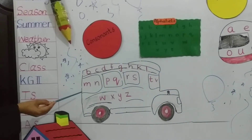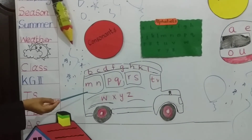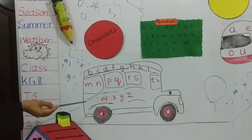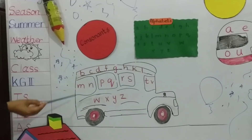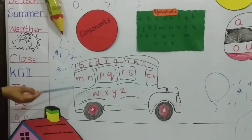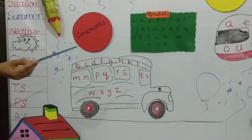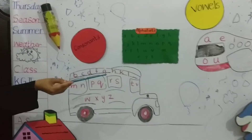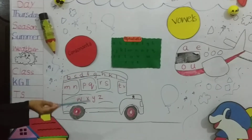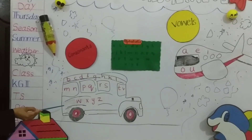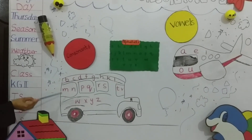The innocent letters that rode by bus are called consonants. So naughty letters are called vowels, and innocent letters are called consonants.